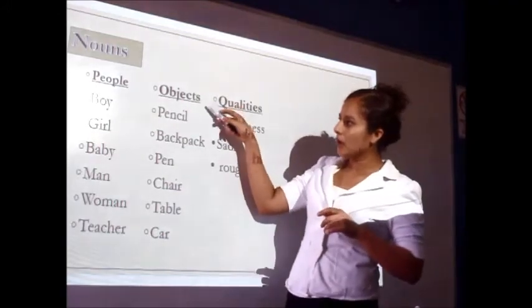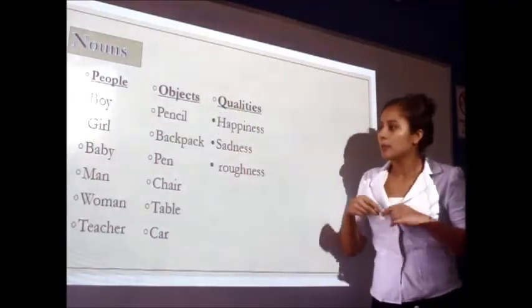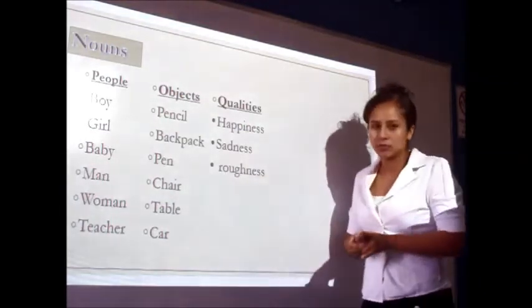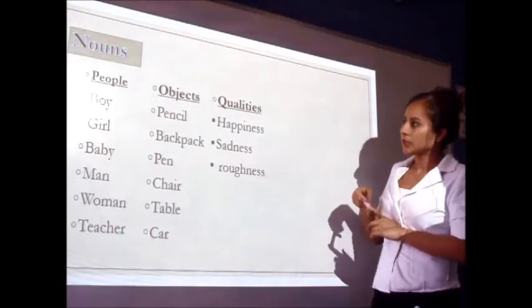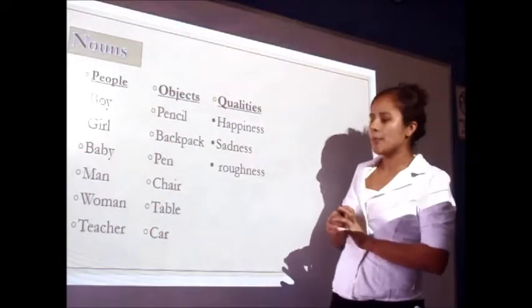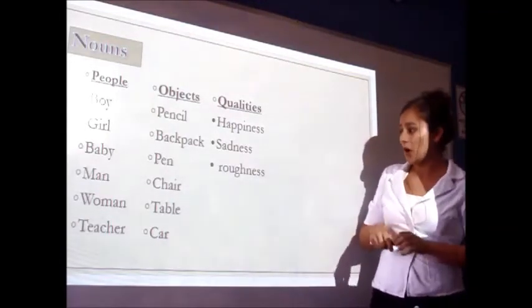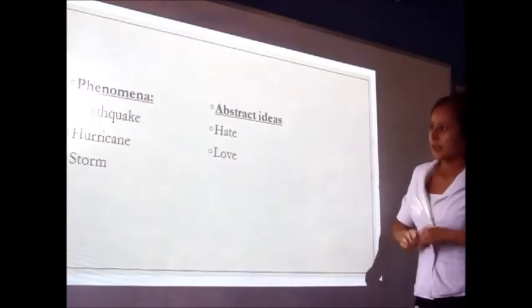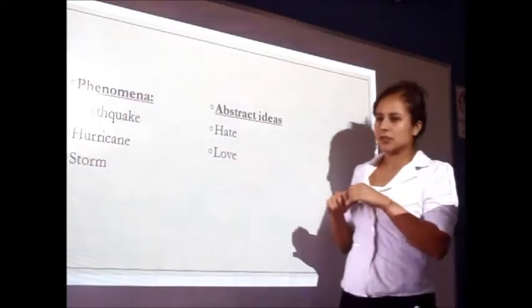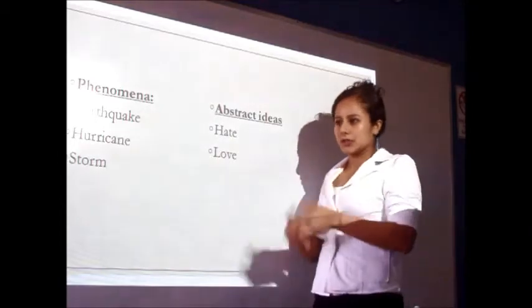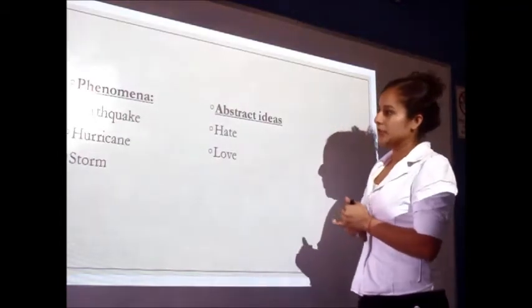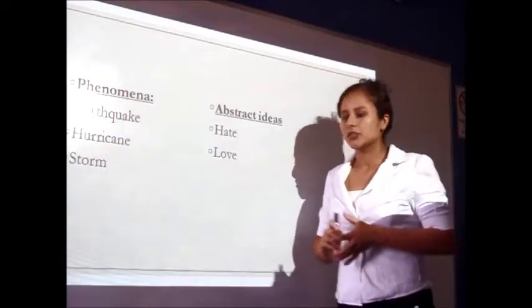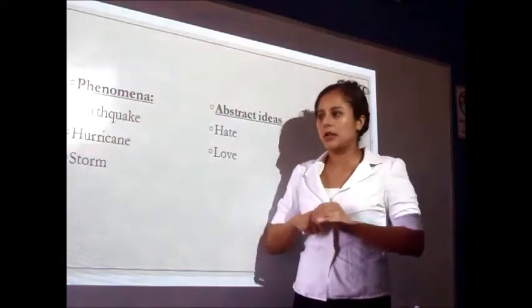Some examples of things around us are pencils, backpack, pen, chair, table, and card. Examples of qualities are happiness, sadness, and roundness. Phenomena are something natural, such as earthquake, hurricane, storm, and many others.